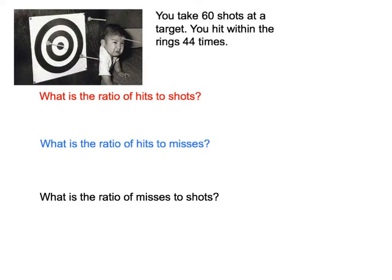So let's look at this problem here. You take 60 shots at a target, and you hit within the rings 44 times. So what I want to know is, what is the ratio of hits to shots? So what we're going to do first is do hits on top, shots on bottom as a fraction. So how many times did you hit? Well, it said 44 times. How many shots did you take? 60.